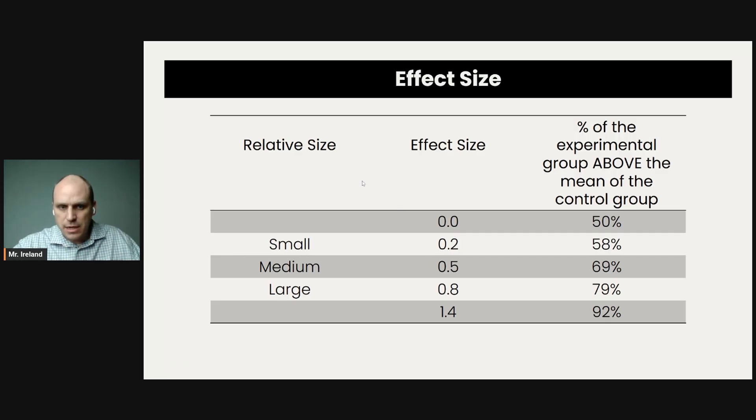So to summarize everything we just said, small effect size is equal to D equals 0.2, medium 0.5, large 0.8. And this is what I was talking about on the last slide. This is the percentage of the experimental group above the mean of the control group. I don't know how deep this is going to get, but I'm going to show you this information so that you can learn it because it might show up.